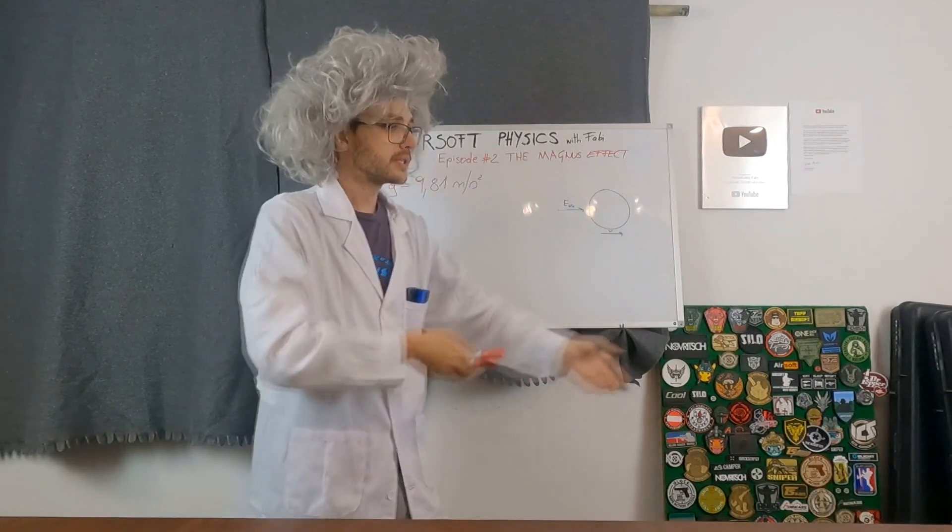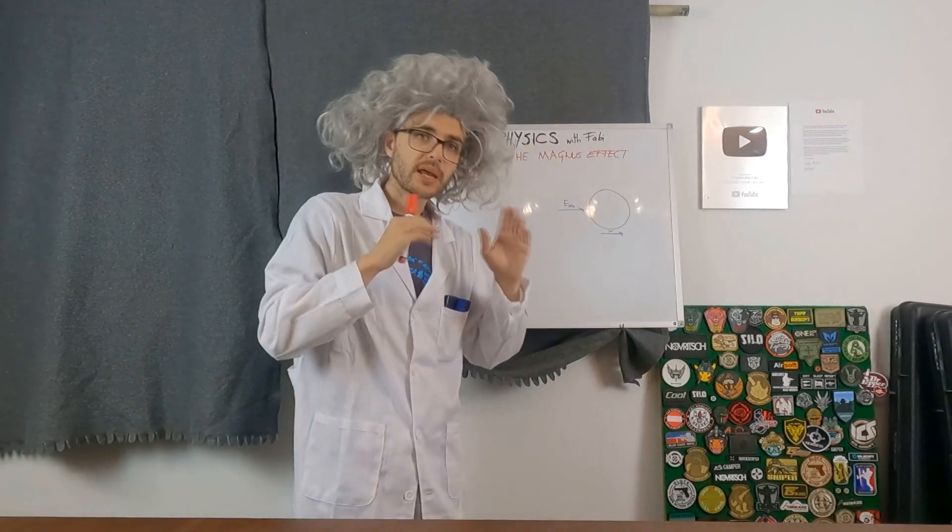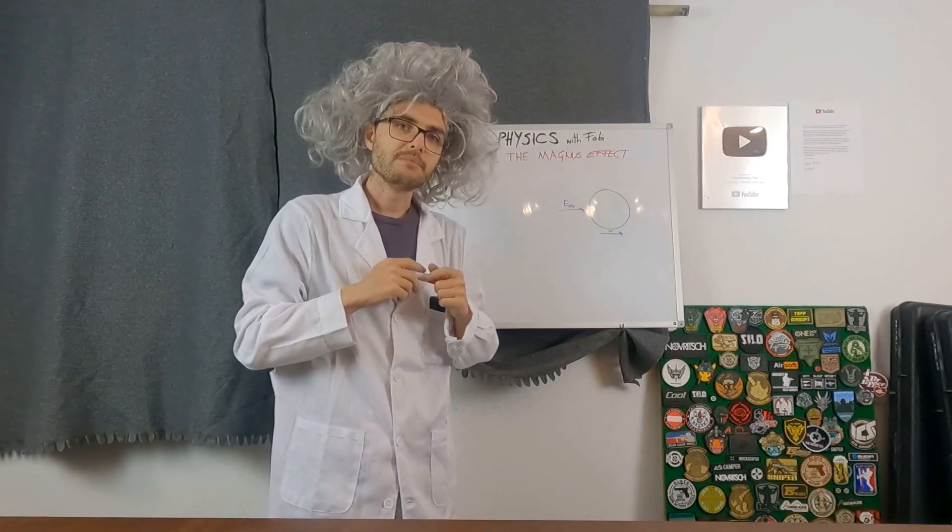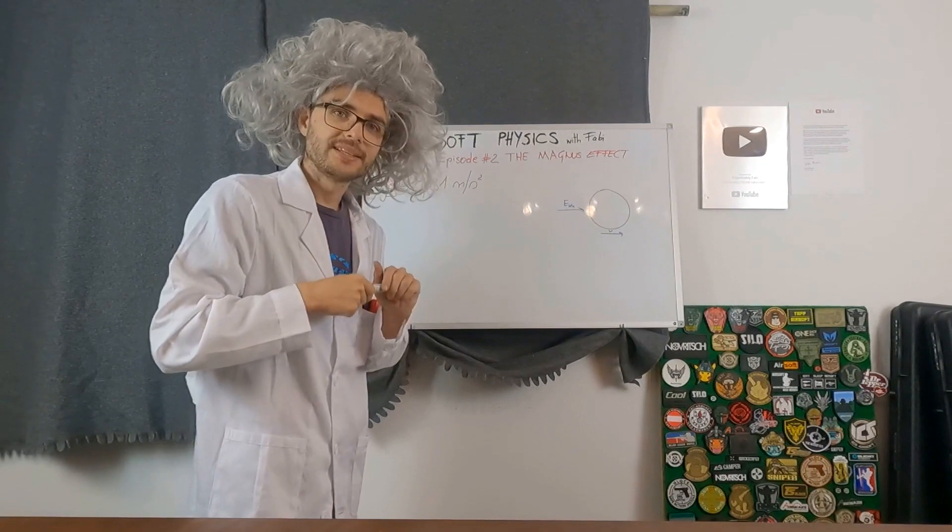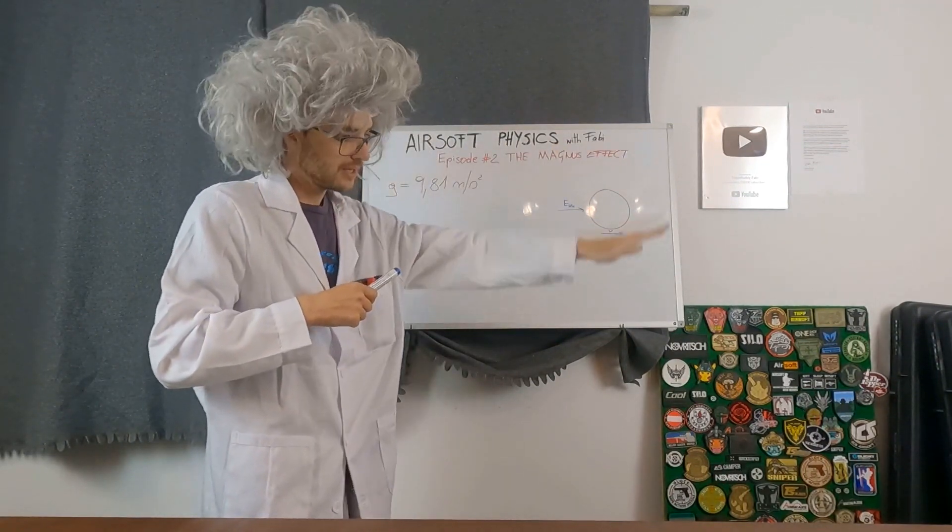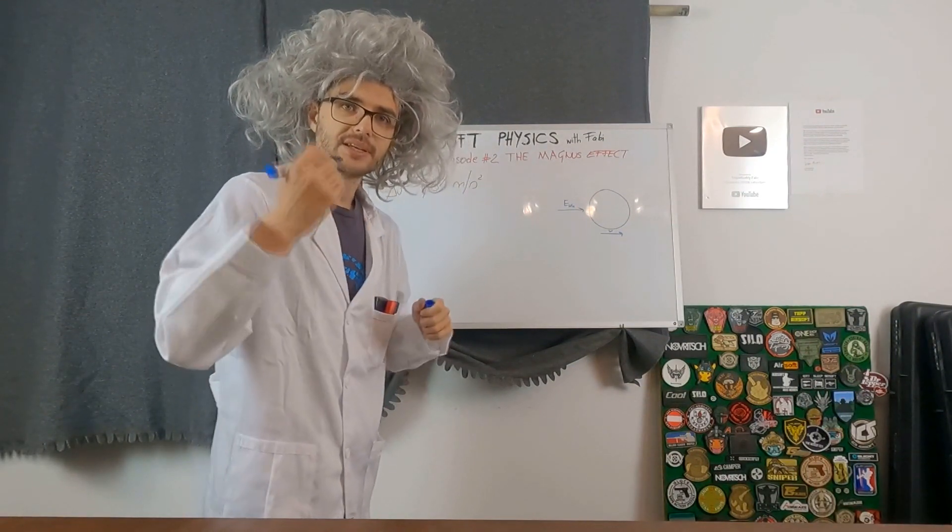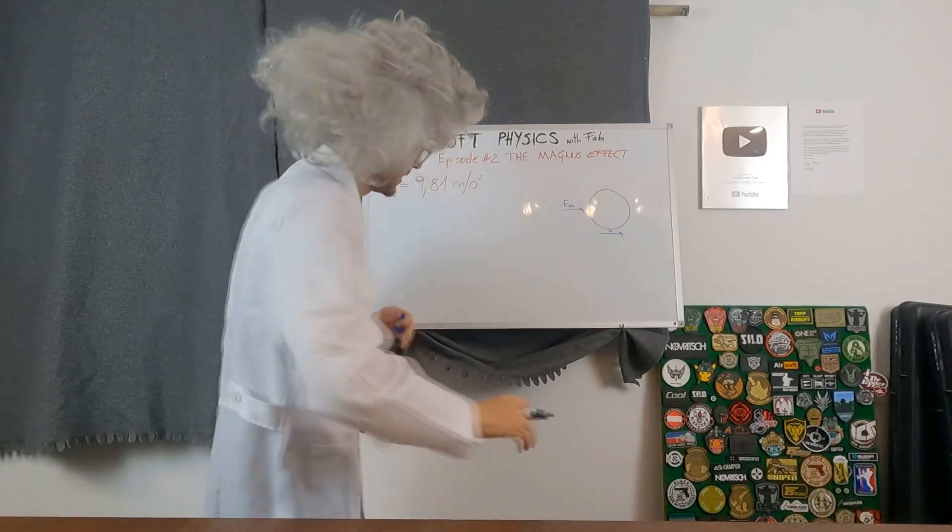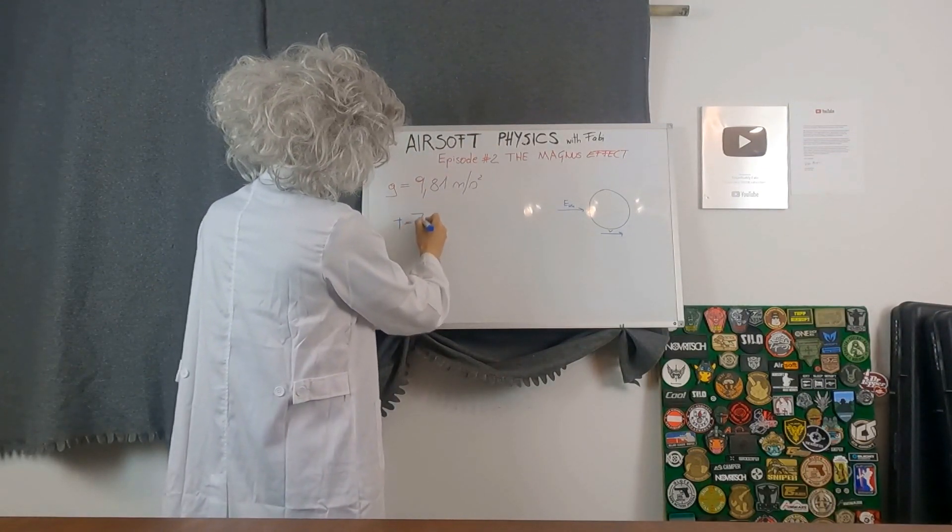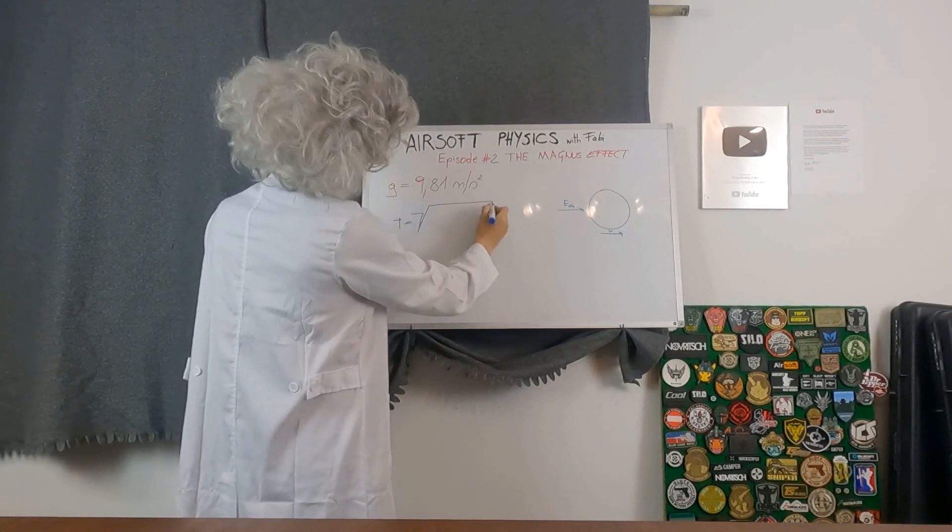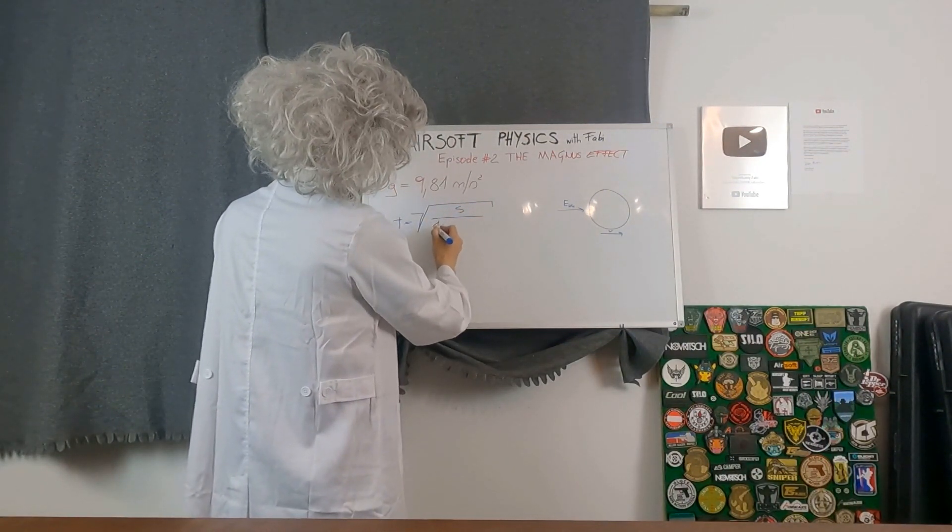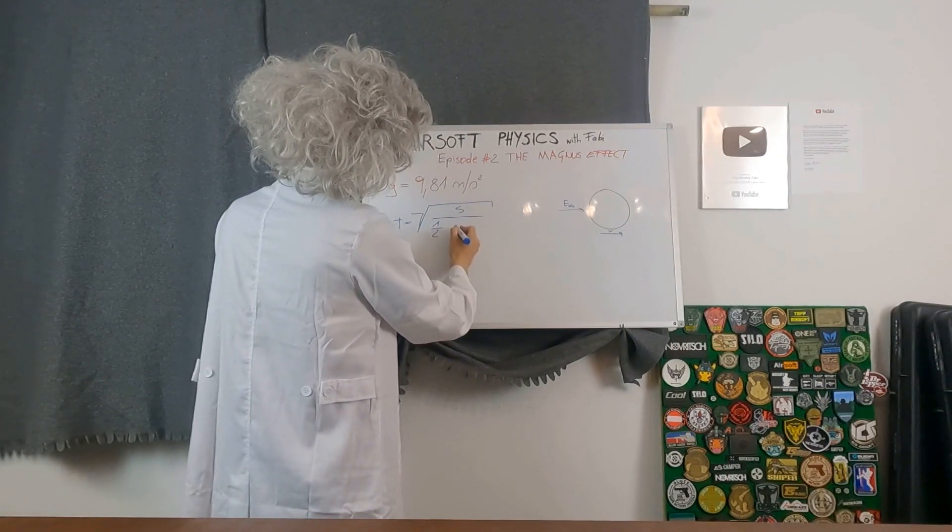Now that we know the acceleration of gravity and how it works on an object, we need to know how long the object takes from a given height. Like in our case, if you shoot your BB, you can calculate from about 5 feet or 1.5 meters. How to calculate the time an object needs from one and a half meters until it hits the ground. And there's an equation for that.